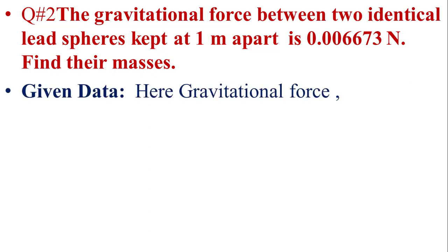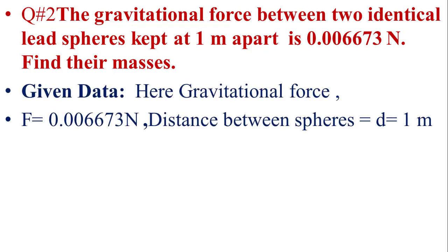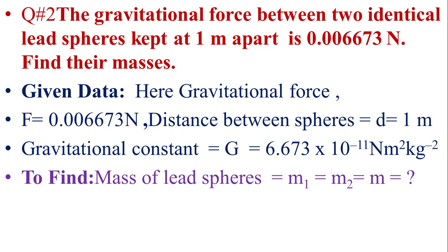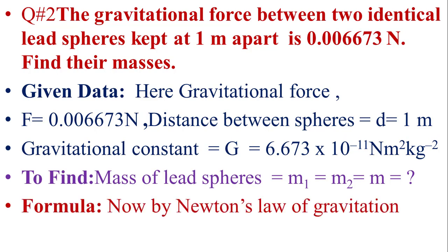Now we write the given data: gravitational force F is equal to 0.006673 Newton, and distance between the spheres D is equal to 1 meter. The gravitational constant G has a value of 6.673 multiplied by 10 raised to power minus 11 Newton meter square per kg square. To find the mass, M1 is equal to M2 is equal to M, because both spheres are identical. According to the law of gravitation, F is equal to G M1 M2 upon D square.